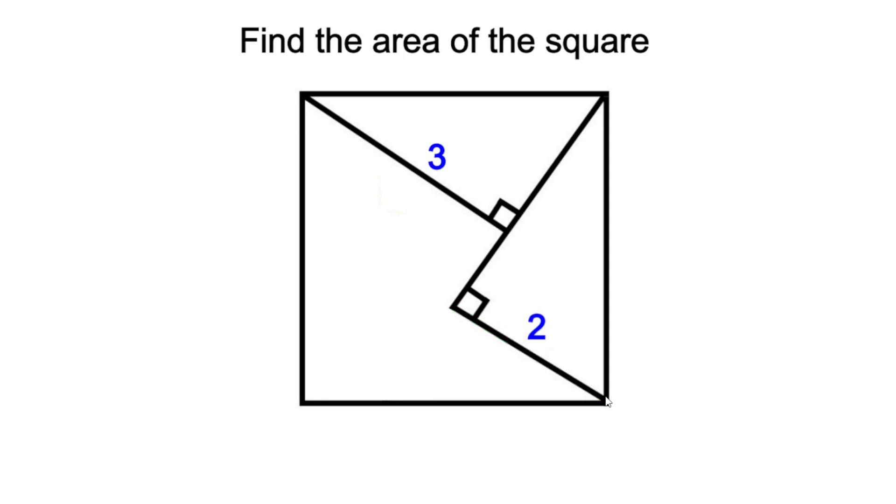So how will we approach a problem like this? Well, just by looking at it, it seems as if both our triangles are identical to each other. We already know that they share their hypotenuse, which is the side of the square.